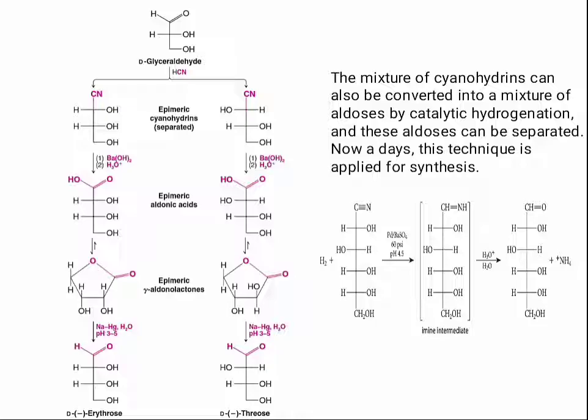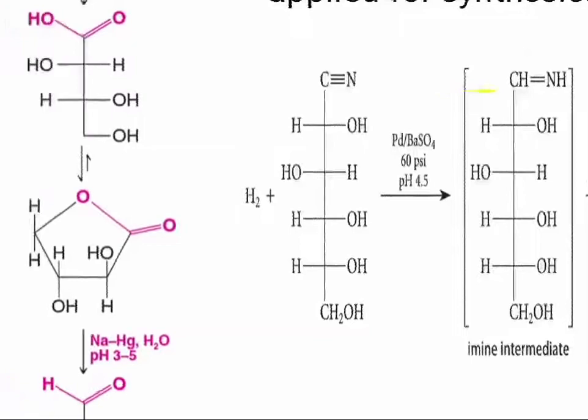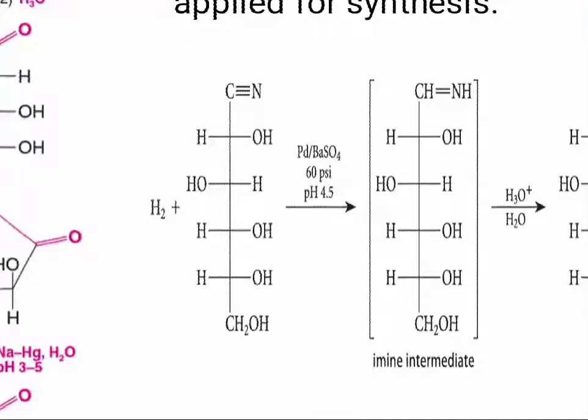Let me zoom in. Here is the procedure of catalytic hydrogenation: you have the CN group, and then if you add a catalyst and control the pH of the reaction, you will get an imine intermediate — CH double bond NH. Then after hydrolysis you will get the aldehyde group.